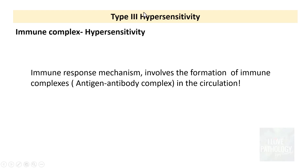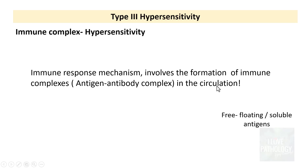Type 3 hypersensitivity is also referred to as immune complex hypersensitivity. It is an immune response mechanism which involves the formation of immune complexes — that is, antigen-antibody complexes — usually formed in the circulation. The antigens involved are free-floating or soluble antigens.